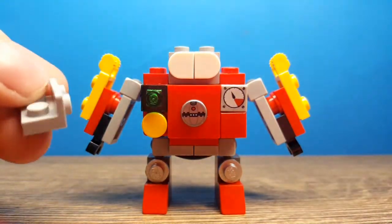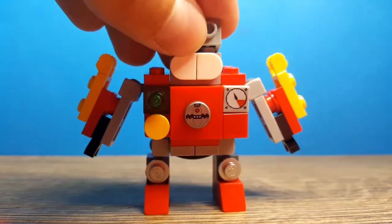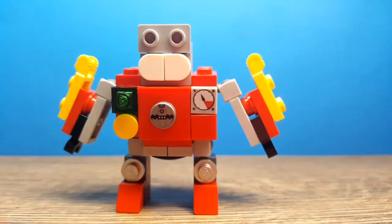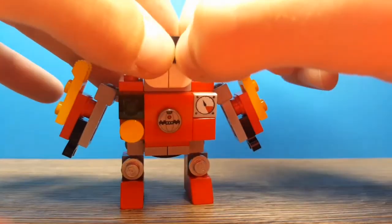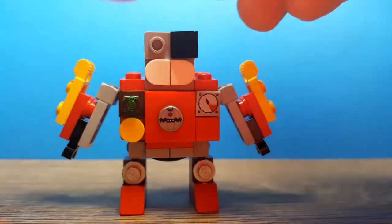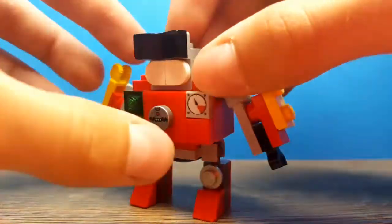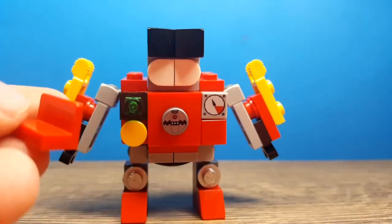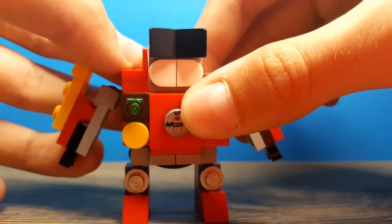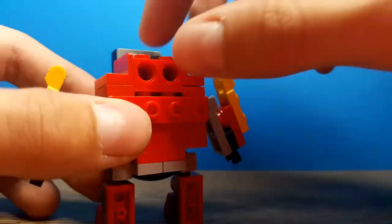Add this 1x2 plate which has studs on the side. 2 of these black cheese slopes just like this. Add 2 of these red pieces on each side just like that on the back.